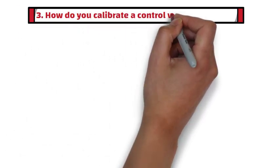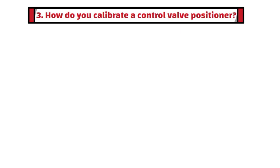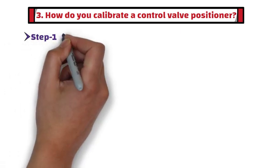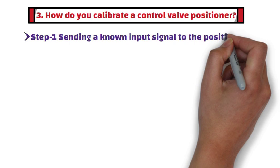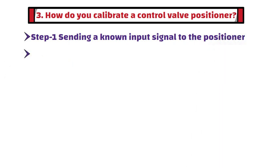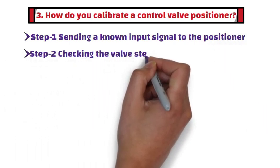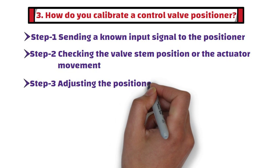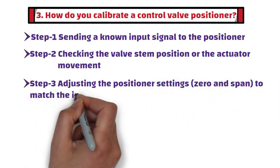Third question: How do you calibrate a control valve positioner? Calibration can be carried out in three main steps. Step 1: Send a known input signal to the positioner. Step 2: Check the valve stem position or actuator movement. Step 3: Adjust the positioner settings, zero and span, to match the input signal with the valve's position accurately.